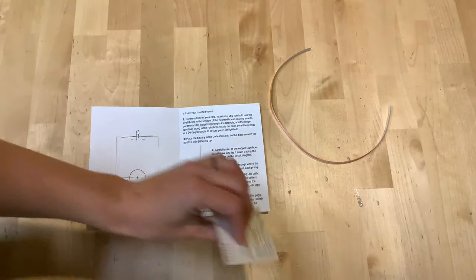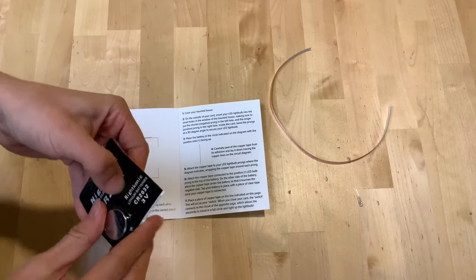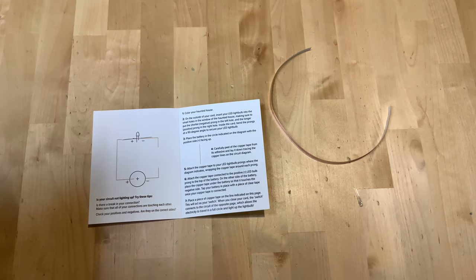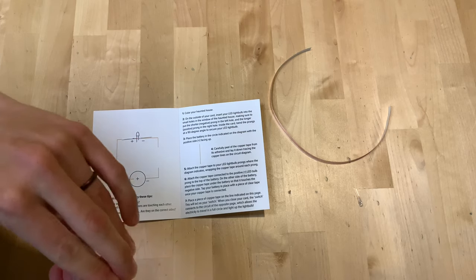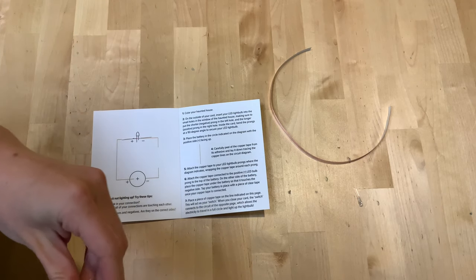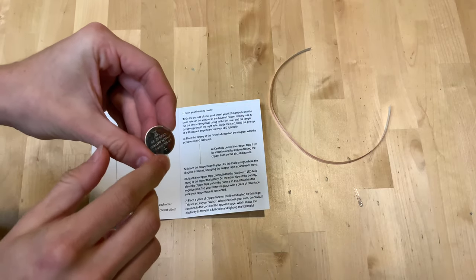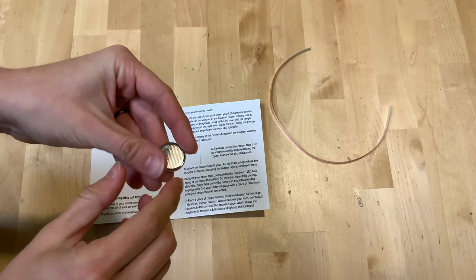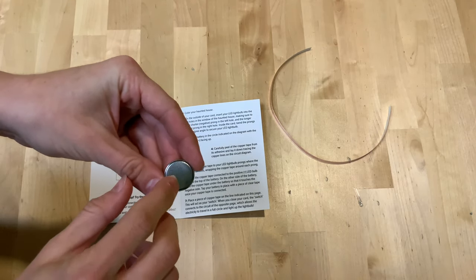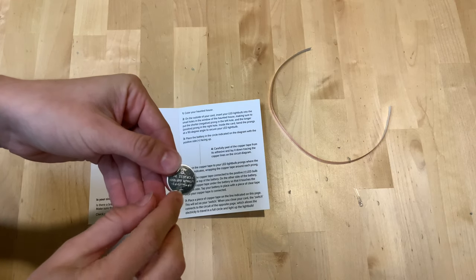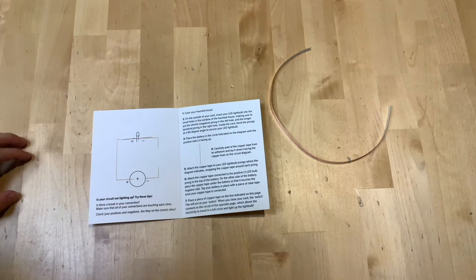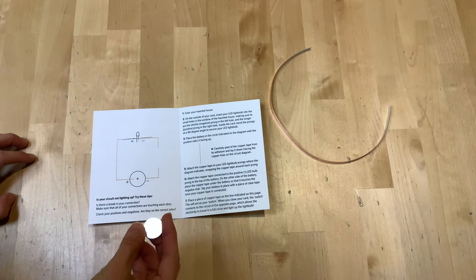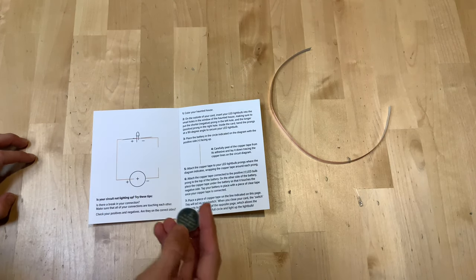Next we're going to open up our batteries. You'll see your battery has a plus on one side and the other side is the negative side. So make note of which side has the plus sign on it. Place the battery in the circle indicated on the diagram with the positive side, the plus side, up.